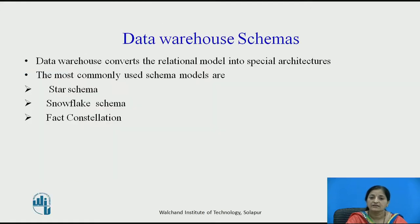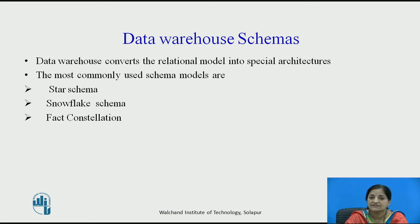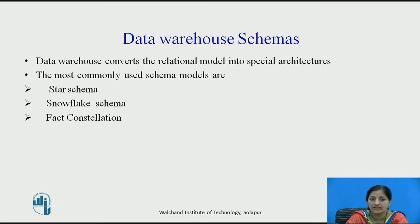Now let us see the Data Warehouse schemas. A Data Warehouse schema usually uses multi-dimensional modeling, storing data in two types of tables: the fact table and the dimensional table. Data Warehouse converts the relational model into special architectures. The most commonly used schema models are star schema, snowflake schema, and fact constellation.